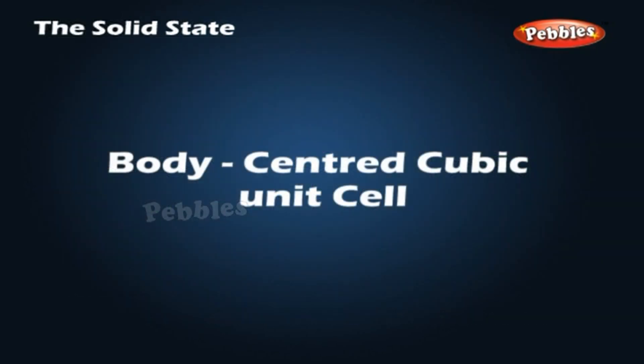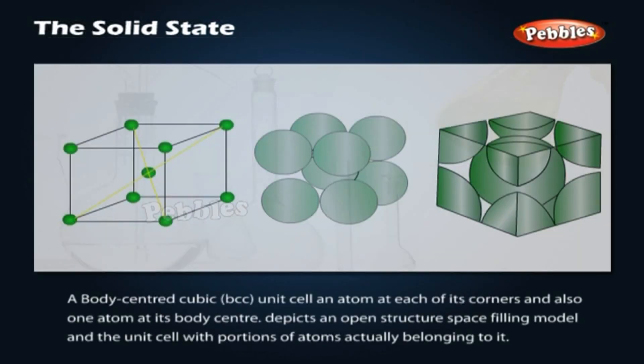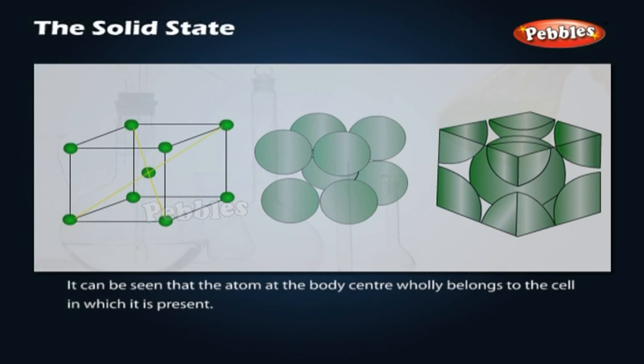Body-centered cubic unit cell. A body-centered cubic unit cell has an atom at each of its corners and also one atom at its body center. Shown are an open structure, a space-filling model, and the unit cell with portions of atoms actually belonging to it. The atom at the body center wholly belongs to the cell in which it is present.